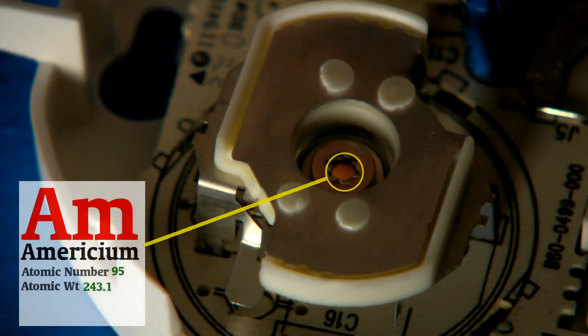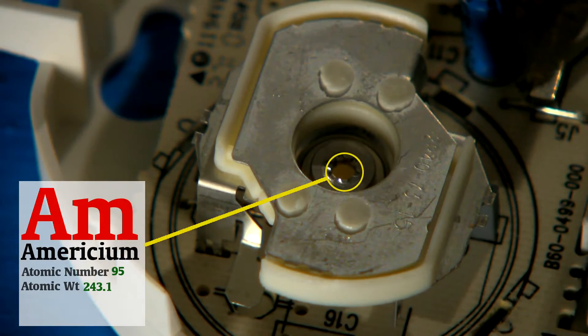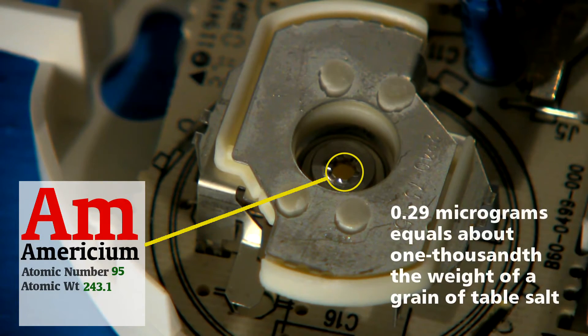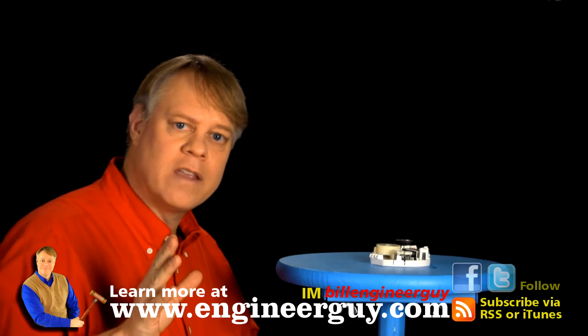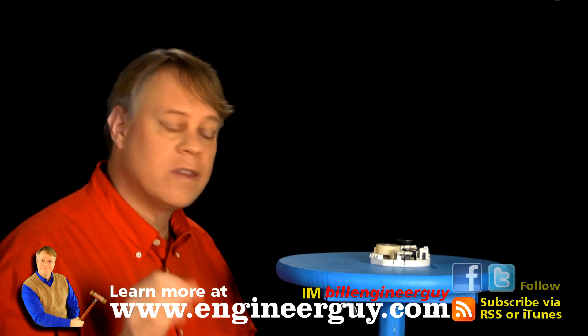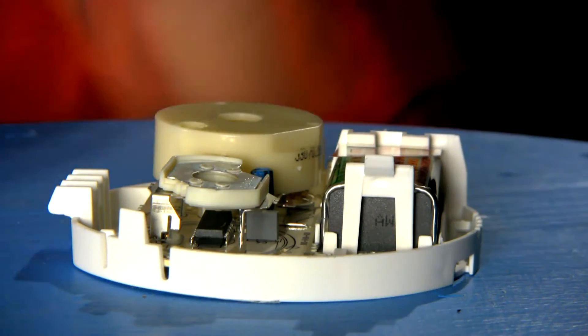Tucked in here lies about one microcurie of radioactive americium-241. That's about 0.29 micrograms. That tiny bit of radioactive material generates a small current that makes the detector work. Let me explain how.